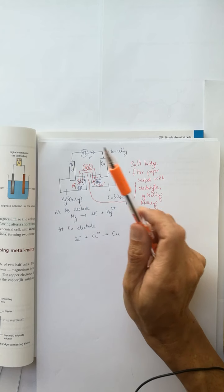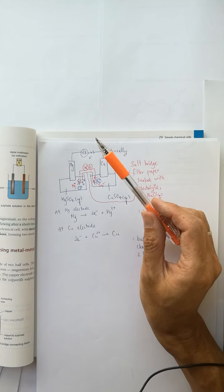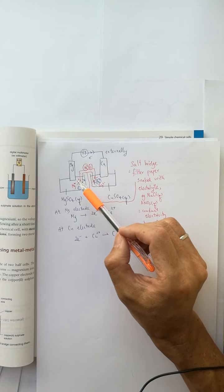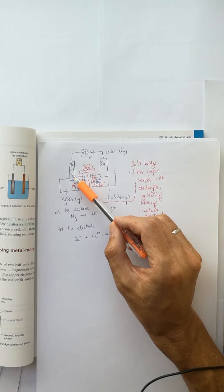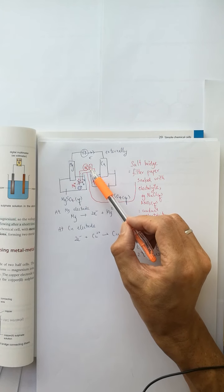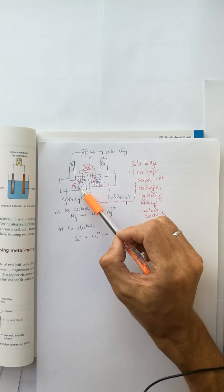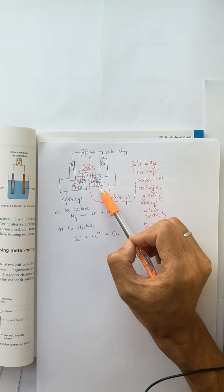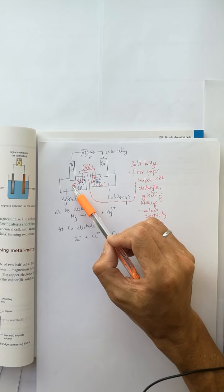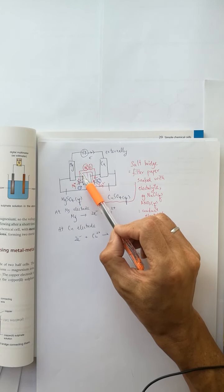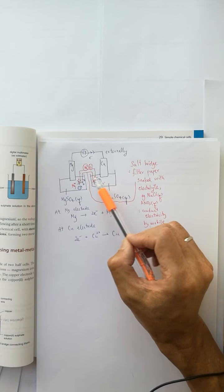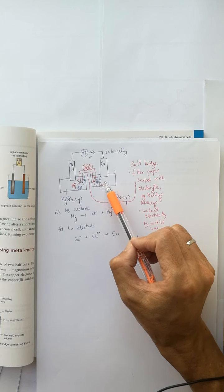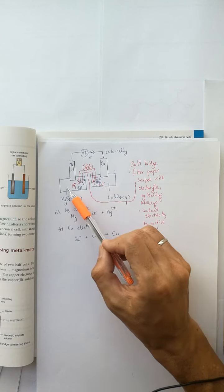The cations move in the opposite direction — anti-clockwise. You can see the sodium ions moving out from the salt bridge. See you next time.